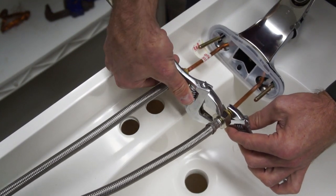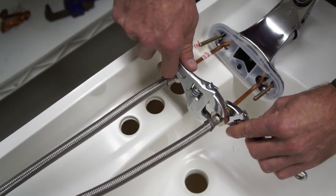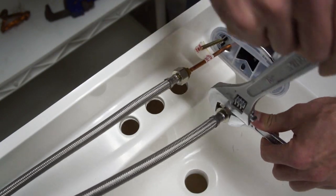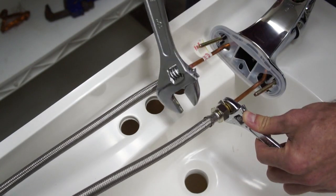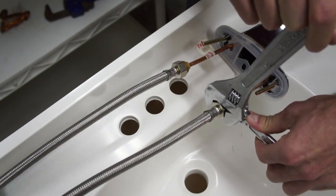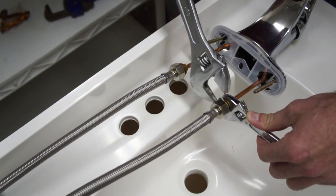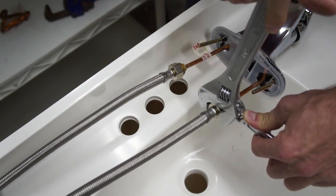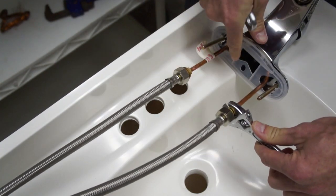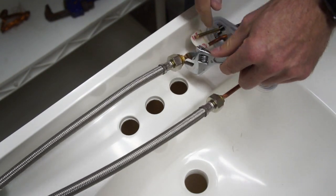And you're going to want to get them fairly tight to make sure that it doesn't leak, but be sure you're holding the back side of that because if you don't hold the back side, you're going to twist that copper line and break it. Once you've got it nice and snug on there, get the other side.